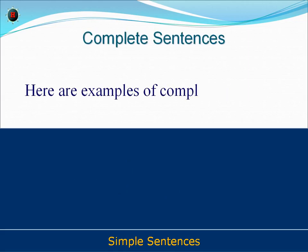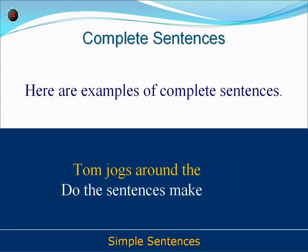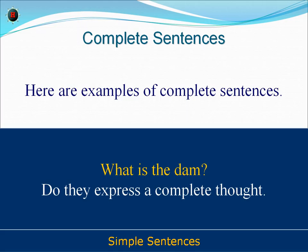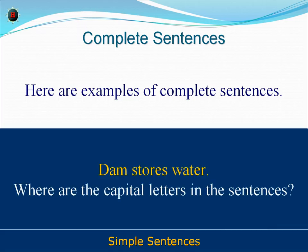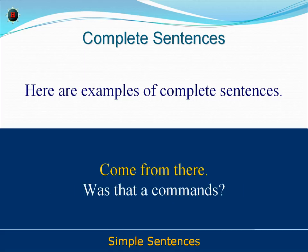Here are examples of complete sentences. Say why these groups of words are complete sentences. Tom jogs around the dam. Do not go there. Come from there.